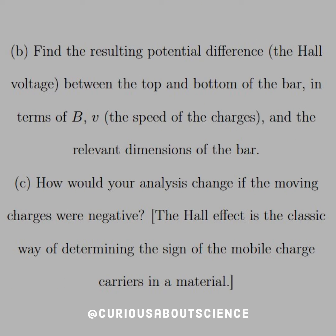Part B: find the resulting potential difference — this is the Hall voltage — between the top and the bottom of the bar, in terms of B, V the speed of the charge, and the relevant dimensions of the bar. And Part C: how would your analysis change if the moving charges were negative?